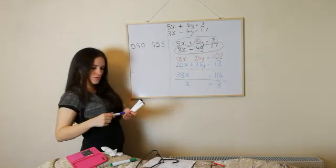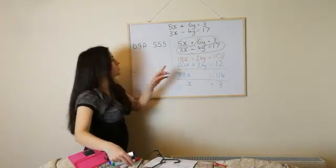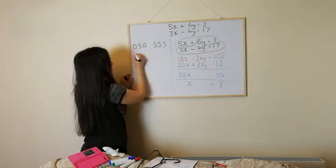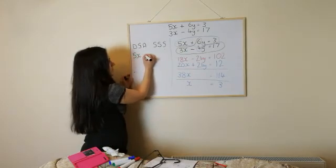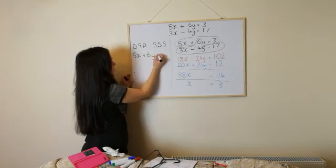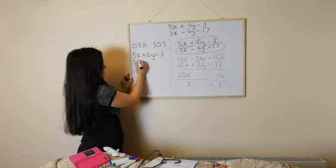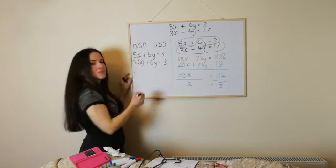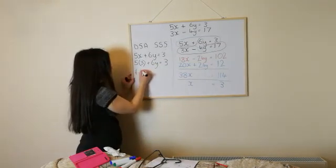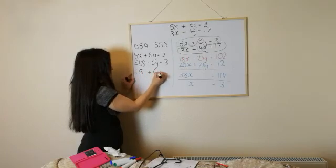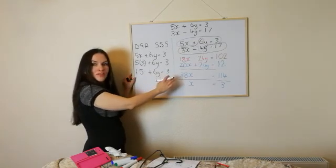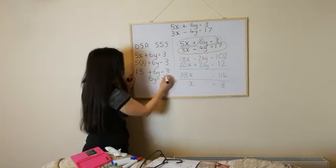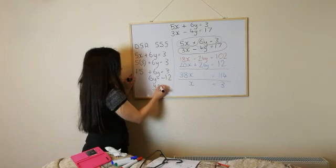And then what I'm going to do, what I've done before, is I'm going to pick one of those equations here and I'm going to sub my x into it. So I think I'm going to go with the top one this time. So we've got 5x add 6y equals 3. So 5 times 3 adds 6y is 3. What I'm going to do is I'm going to take the 15 over to the left hand side. So 6y is equal to 3 take away 15, which is negative 12. And y is equal to negative 2.